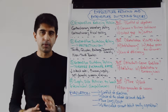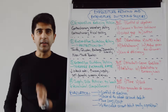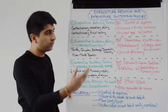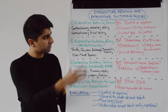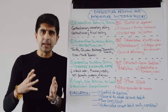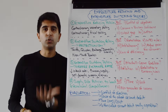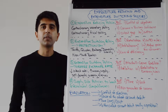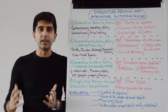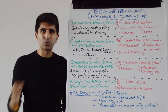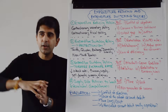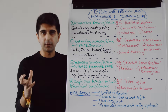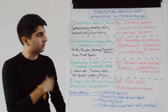We can now look at expenditure switching policy. One type is to use protectionism — protectionist policies such as tariffs, quotas, embargoes, domestic subsidies, and maybe non-tariff barriers. A government can target certain imports of goods and services and use protectionism to reduce import expenditure on those items. With domestic subsidies, the idea is to switch spending on imports towards domestic goods instead — hence the title 'expenditure switching policies.' Money that was being used to spend on imports can now be used to spend on domestic goods and services instead.